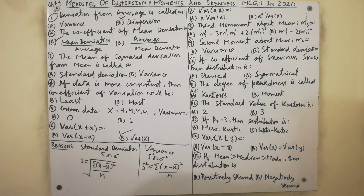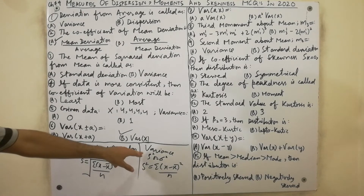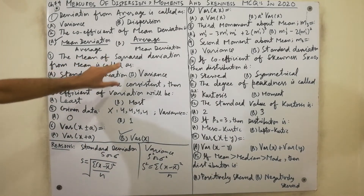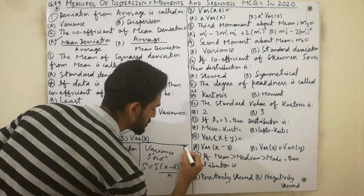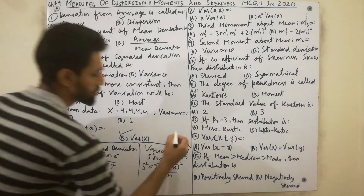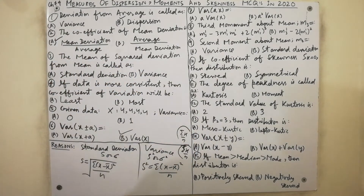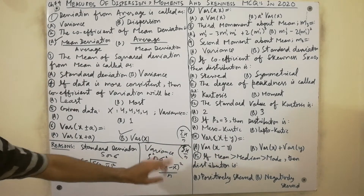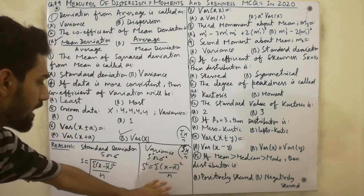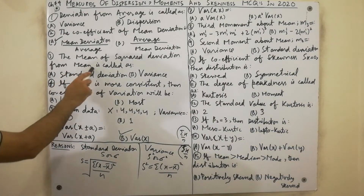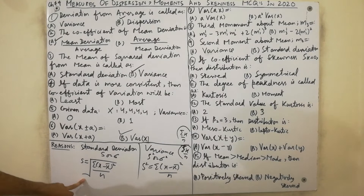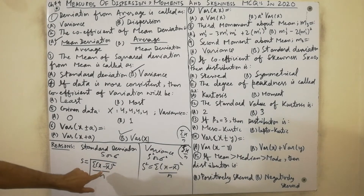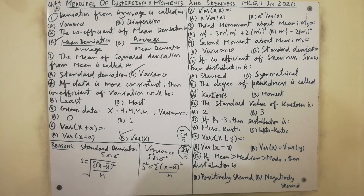From that formula we derive the definition of variance. The mean of squared deviations from the mean is called variance. We know that summation of x over n is called mean, so the mean of squared deviations from mean is called variance. I hope the concept is clear.